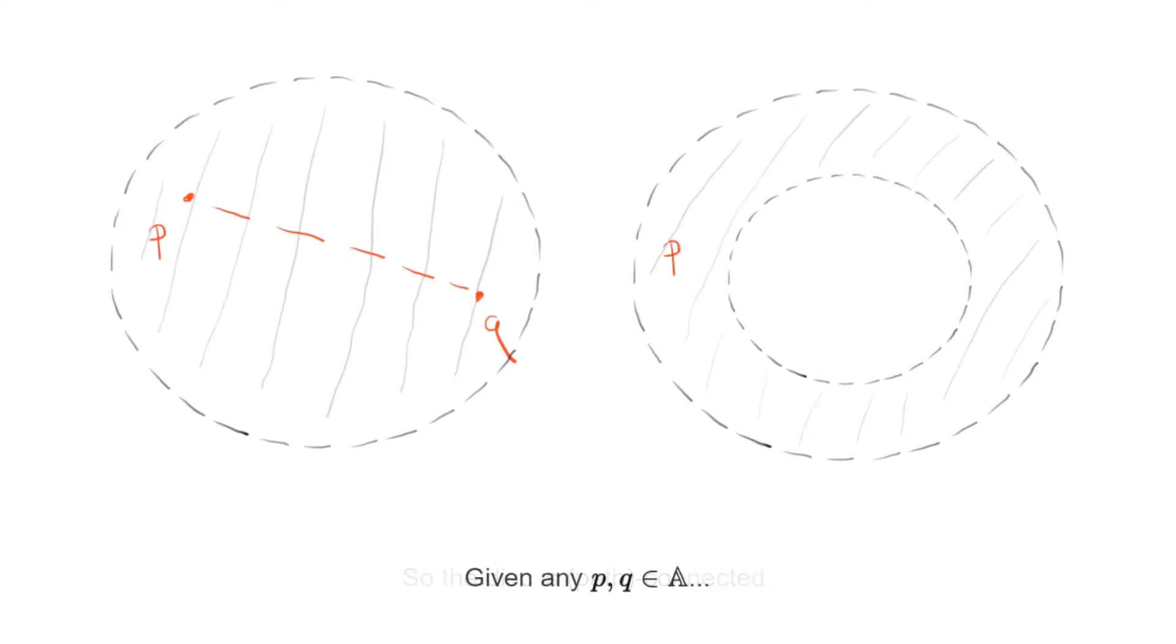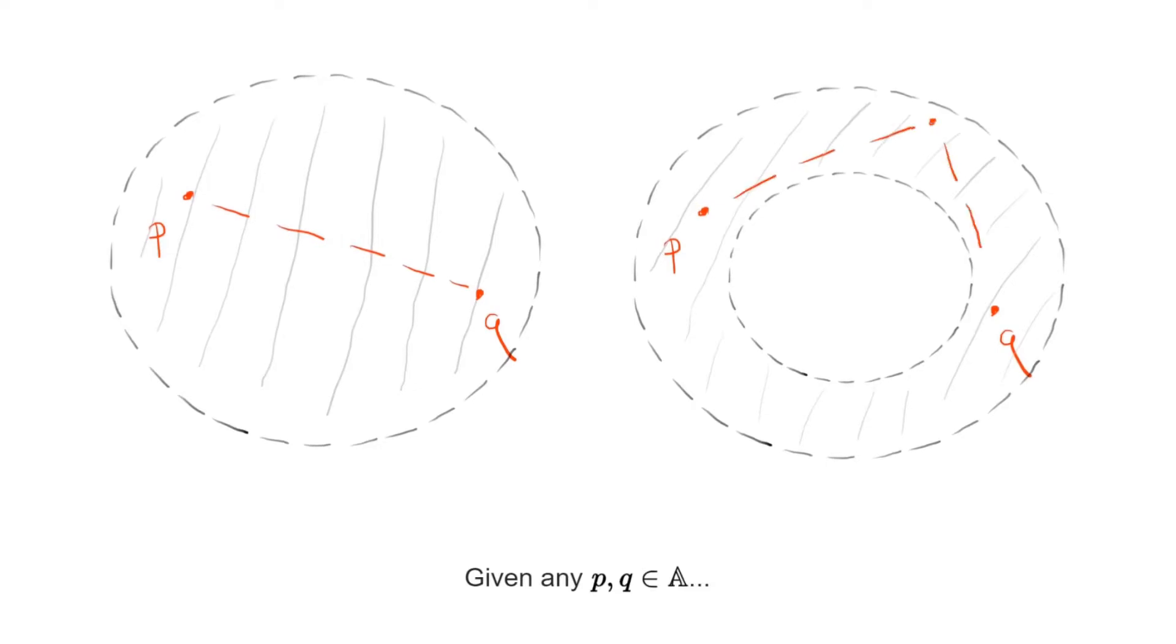The situation in the annulus is a bit different because the straight segment connecting P with Q may pass through the hole that is missing from the annulus. However, it's still possible to connect any two points simply by tracing an arc that avoids the hole.